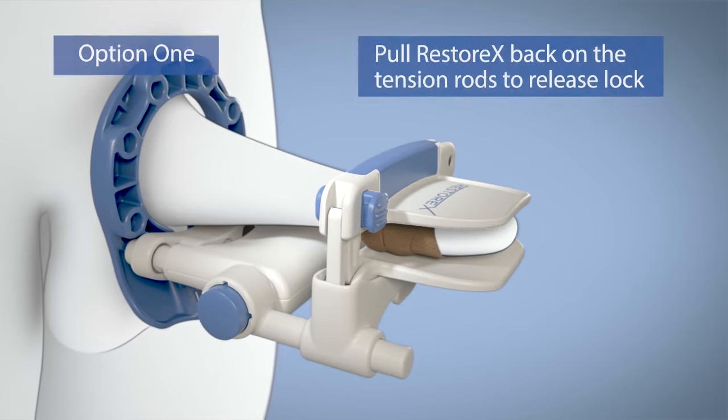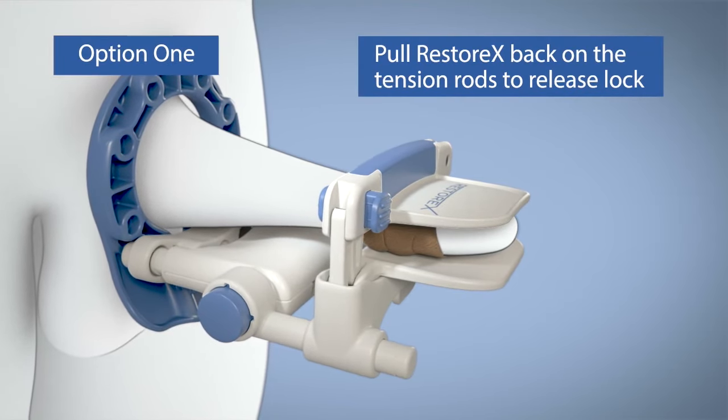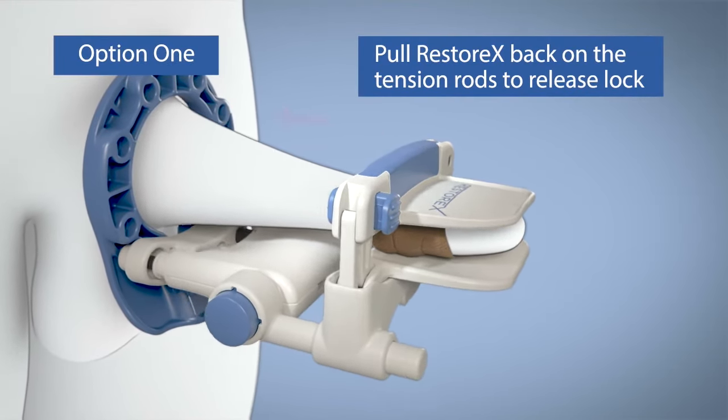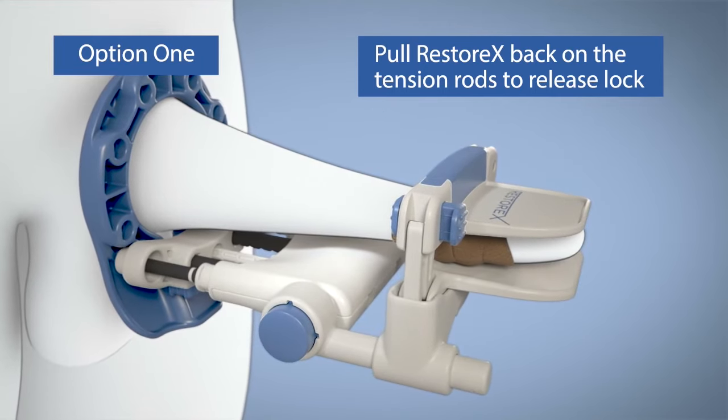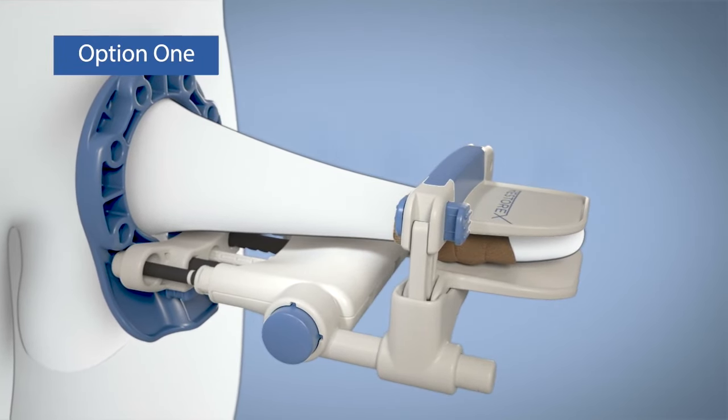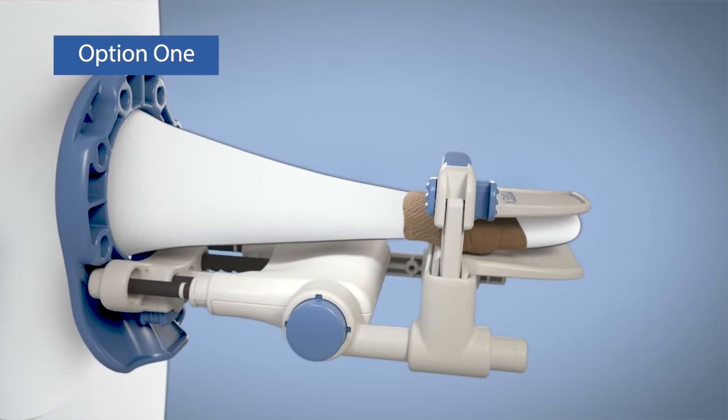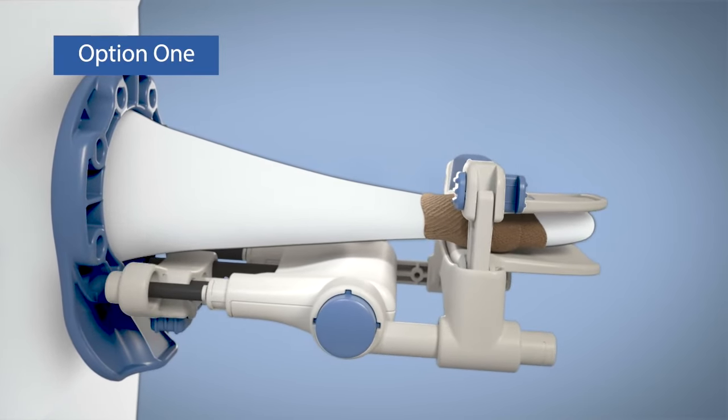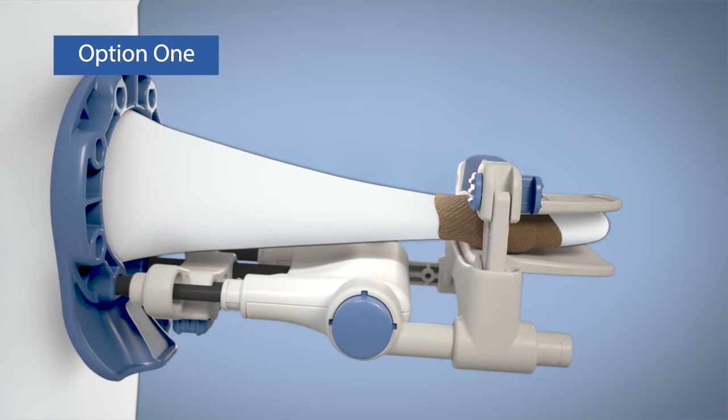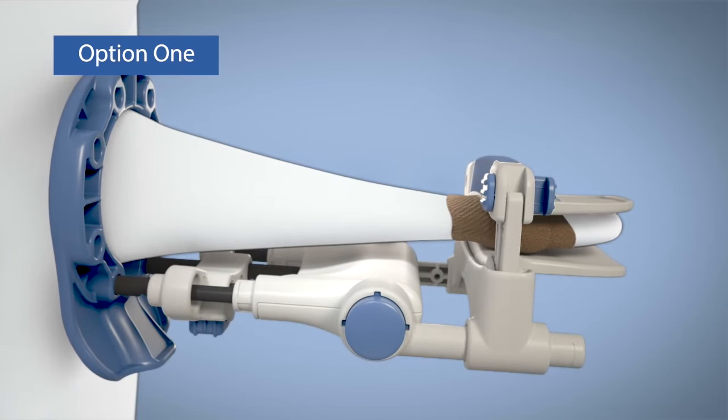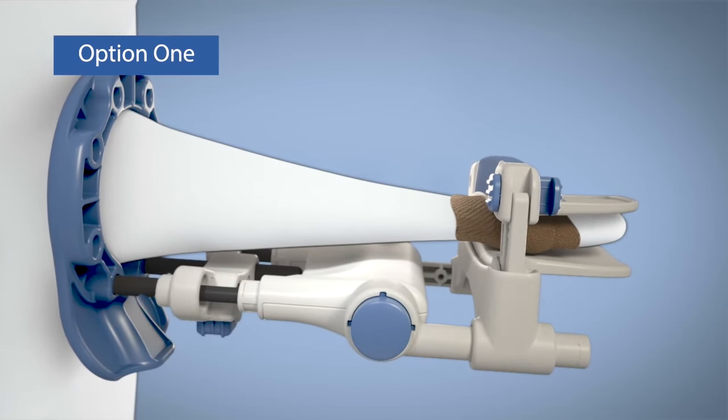Second, as shown, pull Restorex back on the tension rods to release the lock, and then slowly and gently release the springs. Next, while holding the pelvic ring against your body with one hand, lengthen Restorex by pushing it along the extension rods one notch at a time until the white bands on each tension rod can no longer be seen.